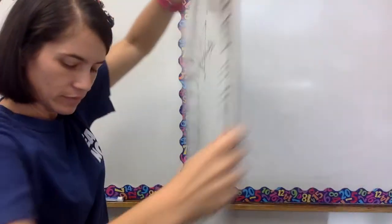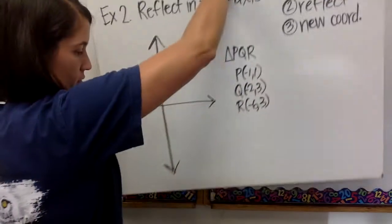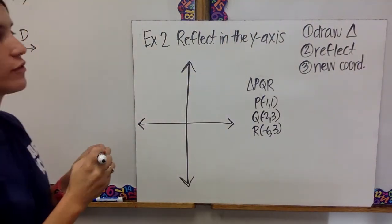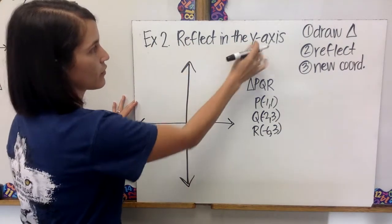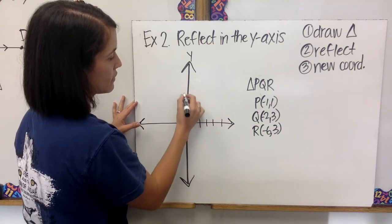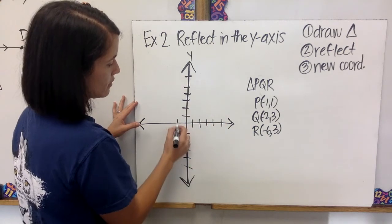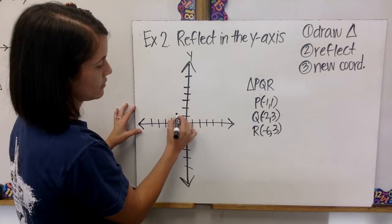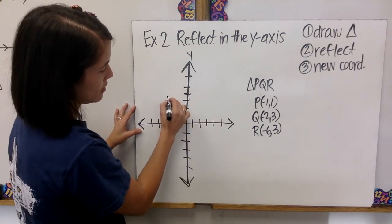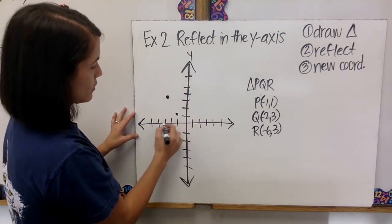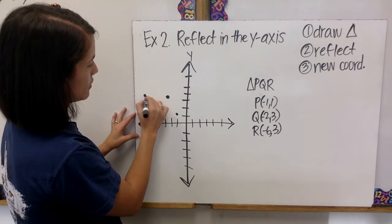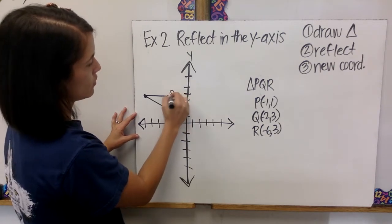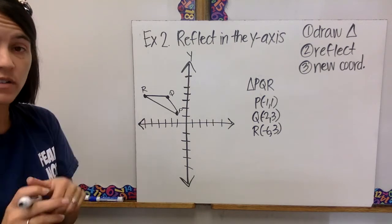We're going to do another example. This time we're going to reflect in the y-axis, so that's going to be our line of reflection. I need to draw this triangle. P is (negative 1, 1), Q is (negative 2, 3), and R is (negative 6, 3). I have my triangle with vertices P, Q, and R. Step one: draw the triangle.